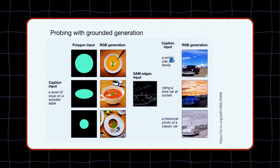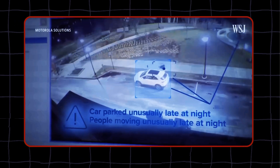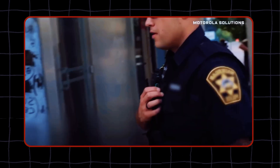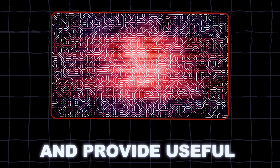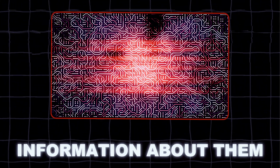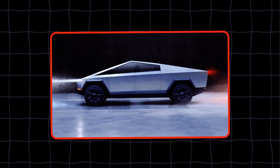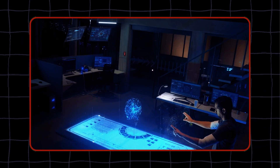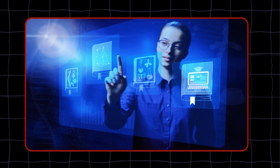But 4M is not just good at creating images. It is also good at detecting and analyzing objects in images and videos. It can recognize and label different things that it sees, and provide useful information about them. For example, if you show 4M a picture of a car, it can tell you its model, color, and speed. This is useful for many scenarios, like security, healthcare, and education.